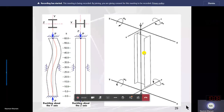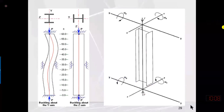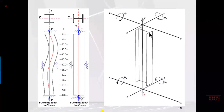In the last lecture, we discussed local buckling of stiffened and unstiffened elements. In an I-section, unstiffened elements are connected from one side only, while stiffened elements are connected from both sides. We check the b/t ratio of the unstiffened element — that is half the flange length divided by flange thickness — and for the web, b is the height of the web divided by its thickness.